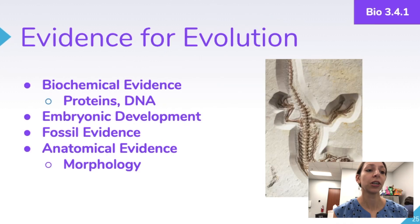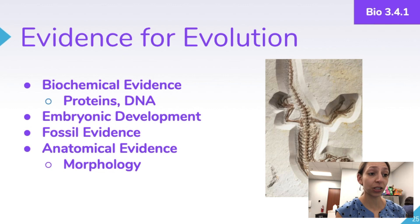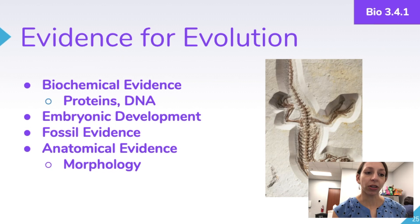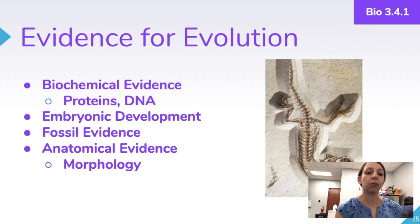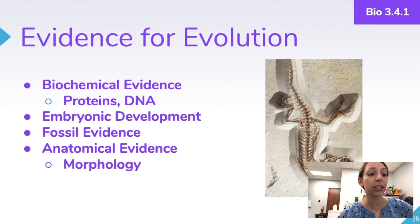Now shifting into the evolution topic — there are many different pieces of evidence scientists use to determine evolutionary relationships. These include biochemical evidence related to proteins and DNA, embryonic development, fossil evidence, and anatomical evidence such as morphology and physical traits. If two different organisms go through similar developmental stages, we can infer they share a common ancestor. And if organisms have similarities in DNA sequences, we can assume they share a recent common ancestor — that's how we determine their evolutionary relationships.